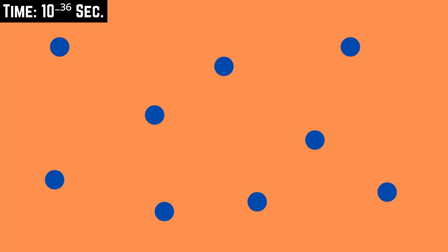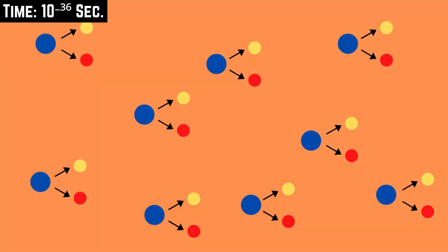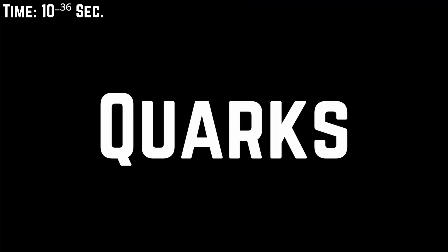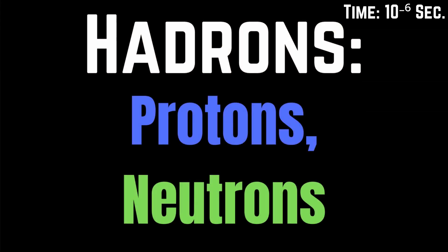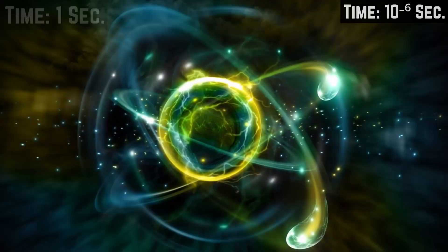Particles called gluons started to form, and these gluon particles soon created more particles called quarks. This cycle continued on and on until the universe was cold enough that no more quark particles were created. The remaining quark particles soon created more particles called hadrons, like protons and neutrons — the building blocks for creating atoms.